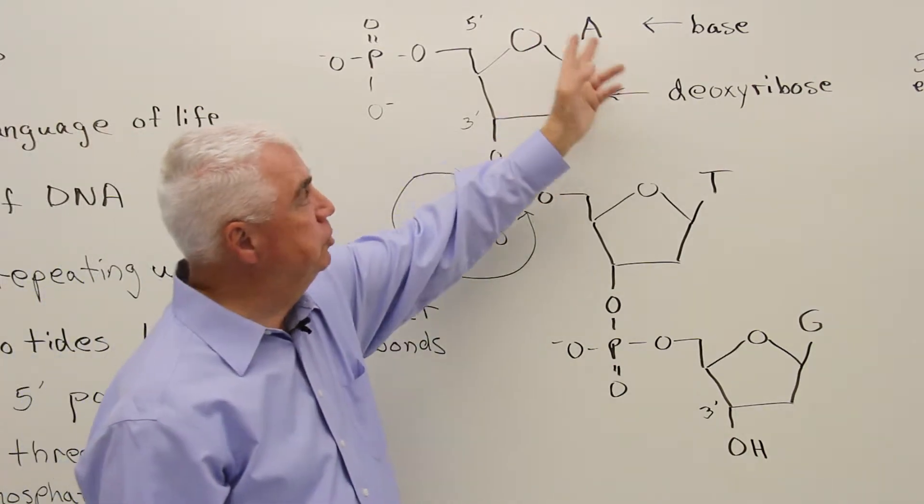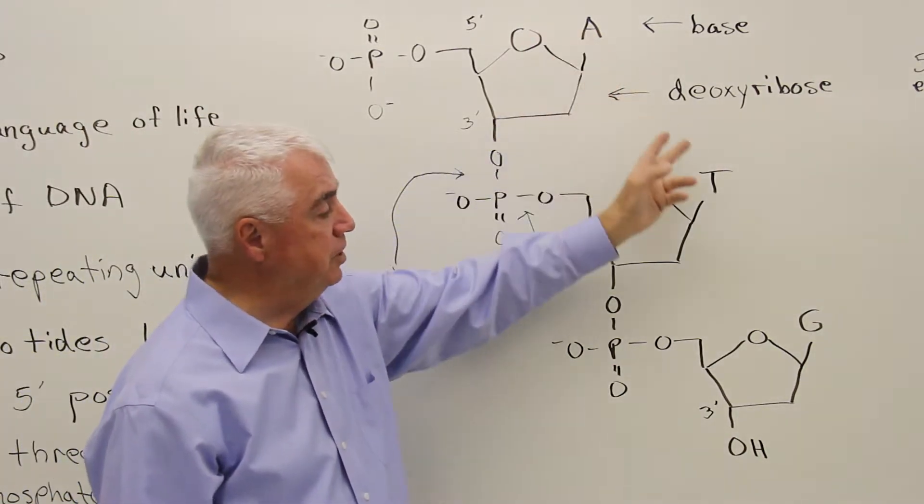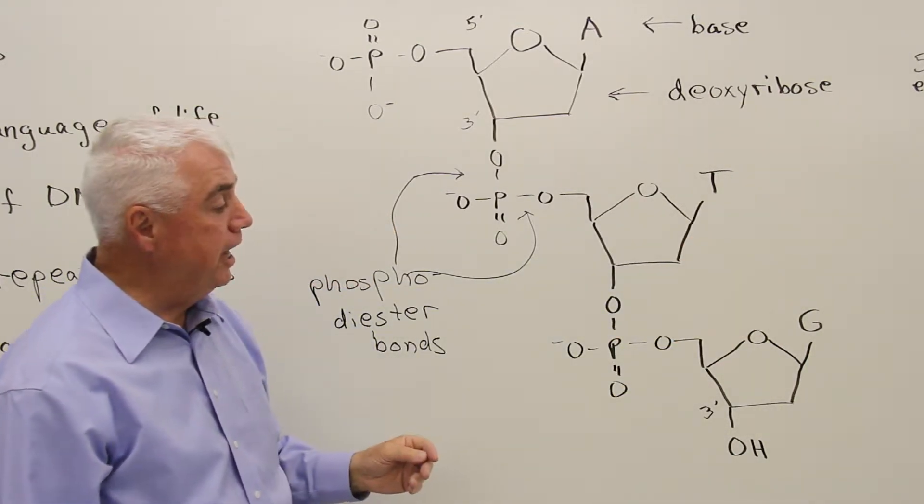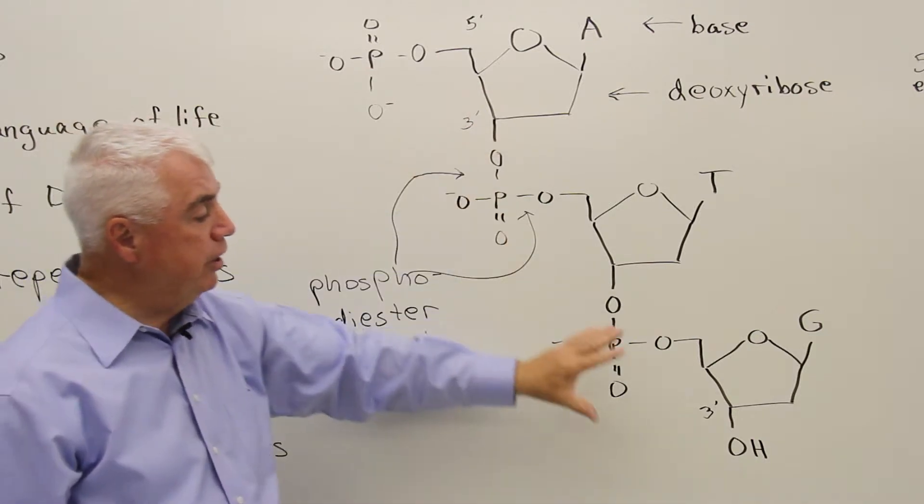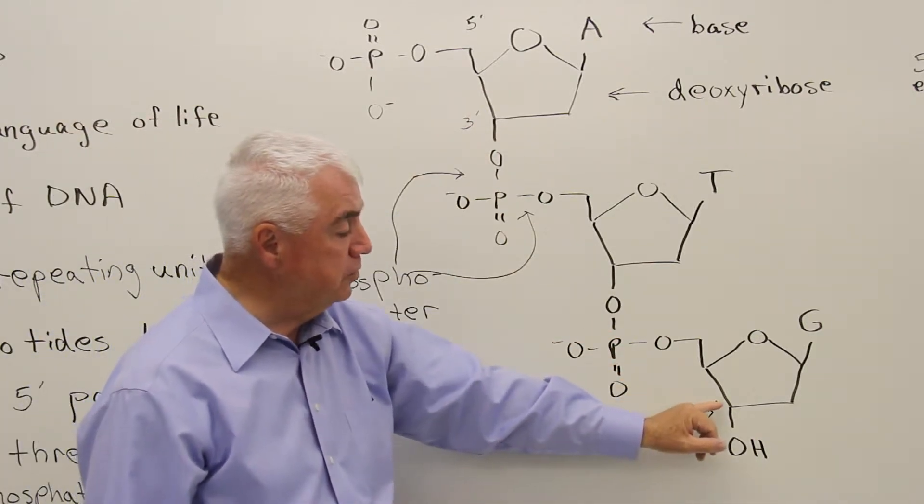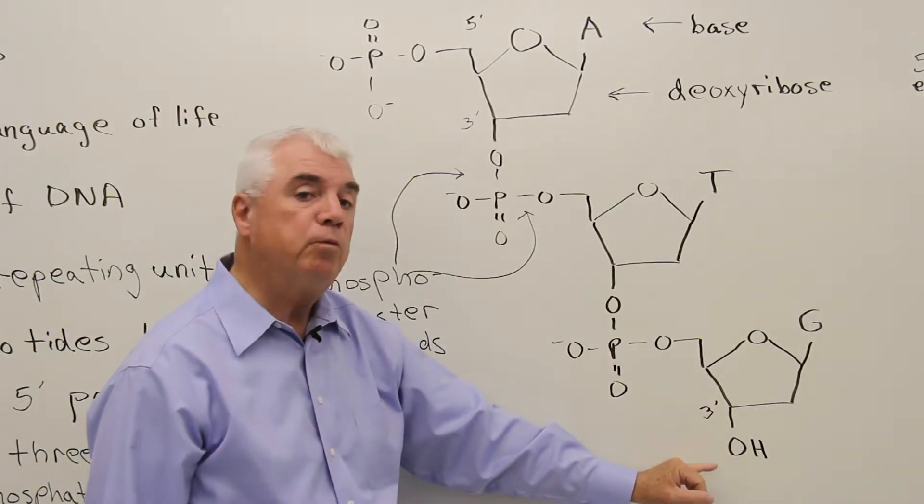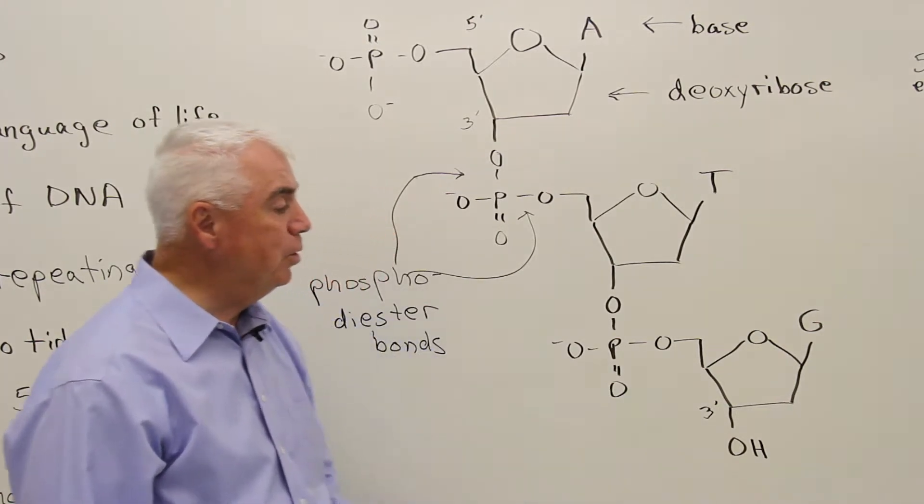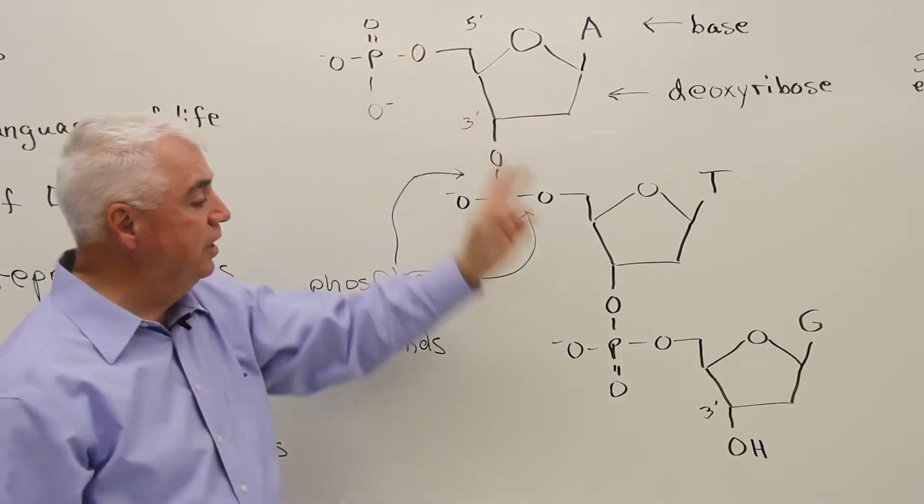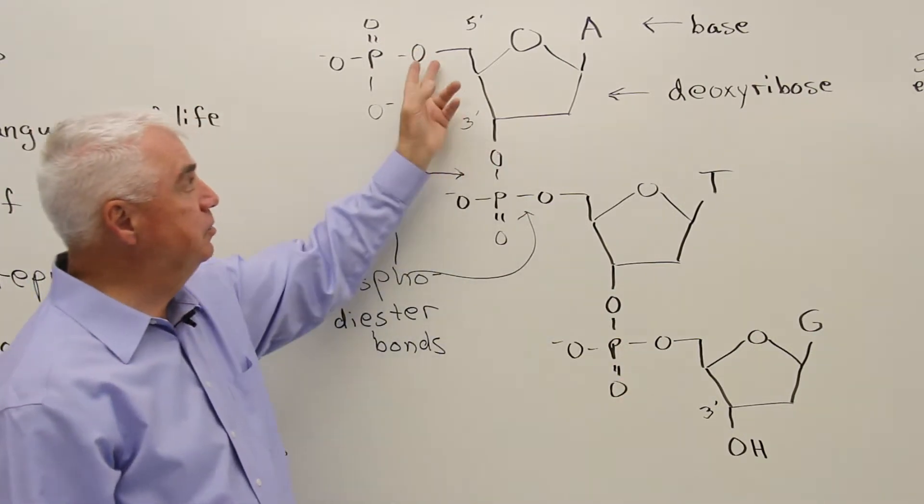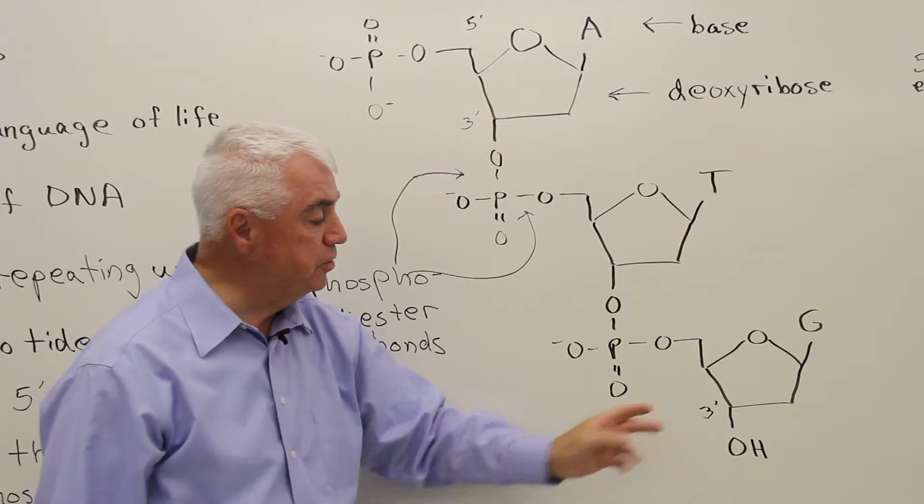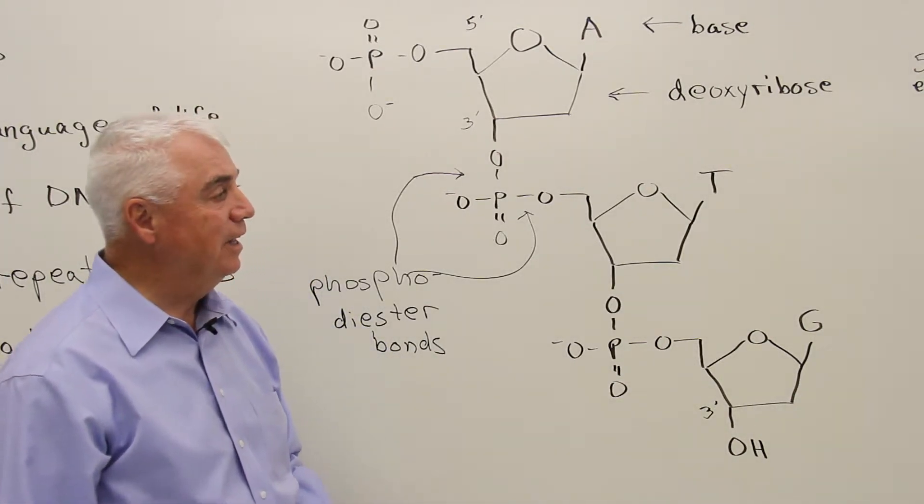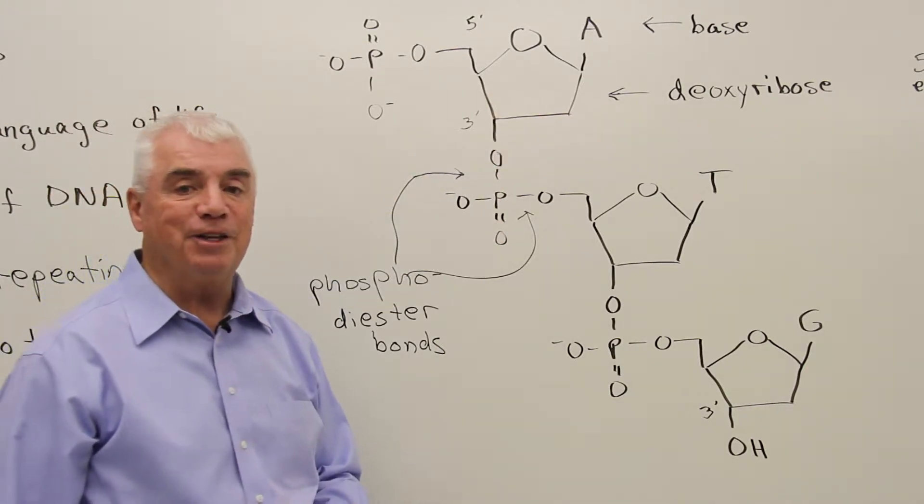The bases, just arbitrarily, I've put them in as A, T, and G. The other base that occurs commonly in DNA is C. Down here at the end of the molecule is the three prime position, and we could put a phosphate down there. I just left it as the OH. The important thing to note is that these two ends are different. This is the five prime end. This is the three prime end. So DNA is a directional molecule.